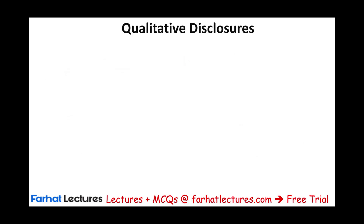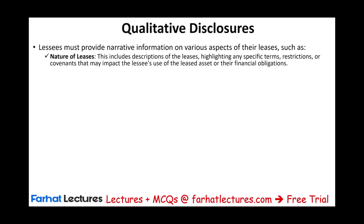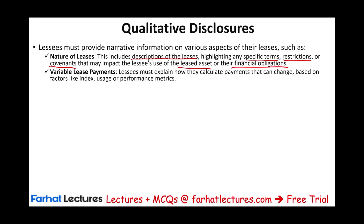Starting with qualitative disclosure — from a logical perspective, if you have a lease, what do you need to know as a user of the financial statements? You want to know information about the nature of the lease: a description of the leases, any specific terms, any restrictions the lease is imposing on the lessee, any covenants like debt covenants that might impact the lessee's use of the leased asset or financial obligations. If there's any variable payment component, explain how it was computed — is it based on an index, usage, or some sort of performance matrix?